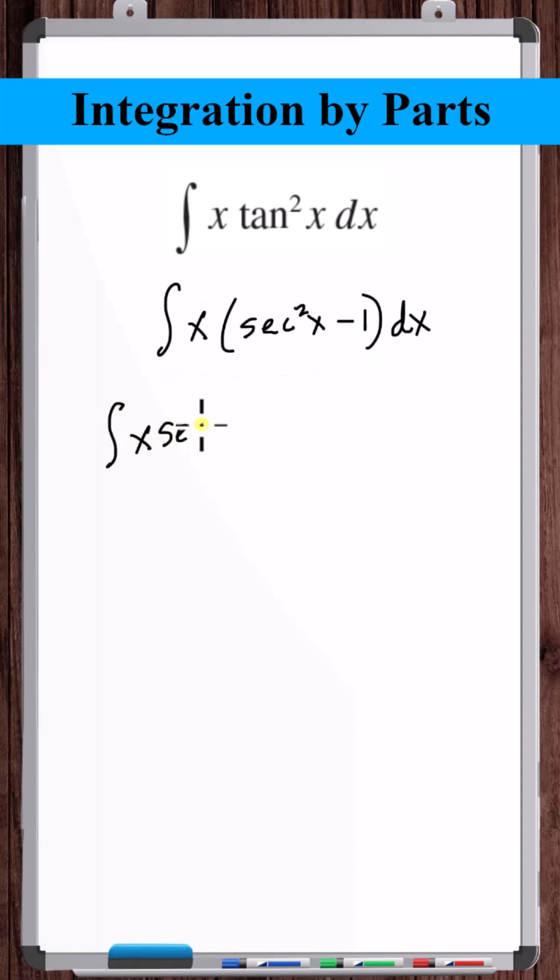Now we can separate this into two separate integrals. Now this integral will be much easier to do integration by parts than the original integral.